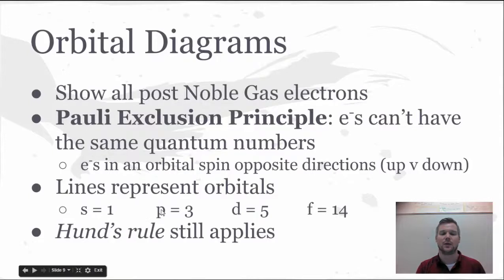P, there's six columns. So six divided by two gives you three. D, there's 10 divided by two gives you five. And F, 14 divided by two, this should say seven. This is a mistake. So this should say seven instead of 14. Hund's rule still applies for these.